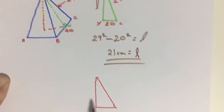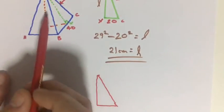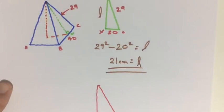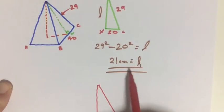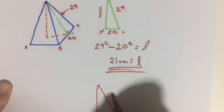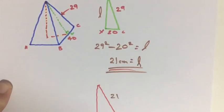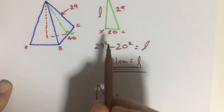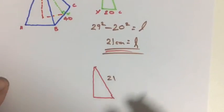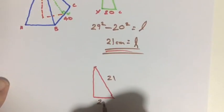So our right triangle, this triangle is the same as this. Well, we found our slant height and we have 20.